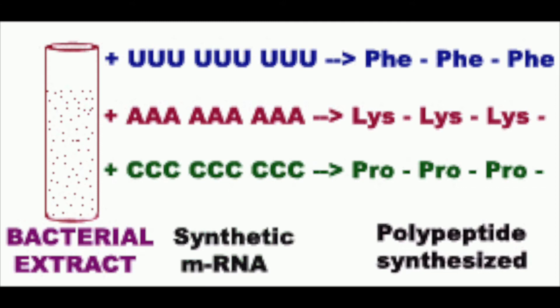Nirenberg and Matthaei then repeated this experiment using poly-C and poly-A RNA, and the results showed that the CCC codon encodes the amino acid proline, while AAA encodes lysine. However, technical issues during the poly-G trial rendered the results uninterpretable.